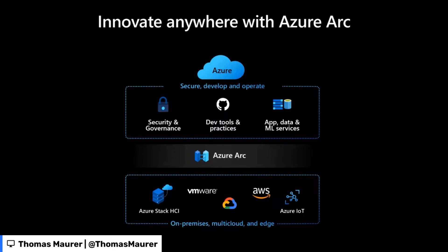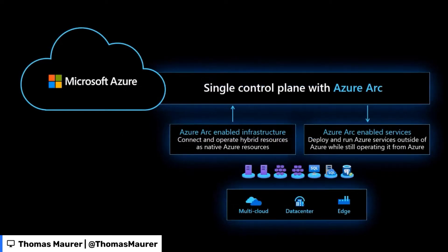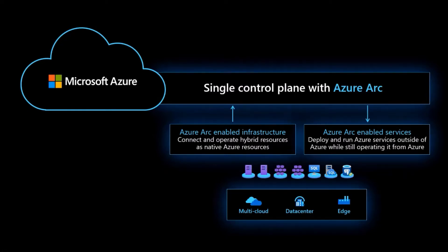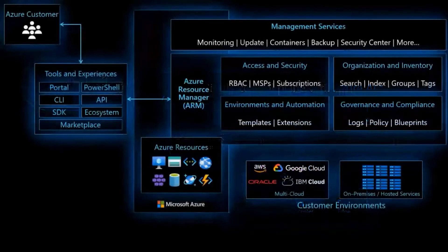What Azure Arc offers is the ability to connect infrastructure — such as servers, Kubernetes clusters, your VMware environment, your Azure Stack environment, your System Center environment — and connect these up to the Azure control plane. Servers show up in the Azure portal as if they were Azure resources, and you can start taking advantage of all the management tooling Azure provides. The other part is bringing Azure services not only to your on-premises infrastructure but also to other cloud providers.